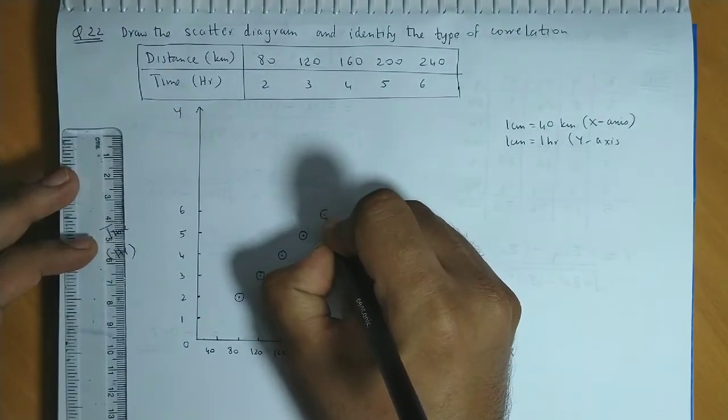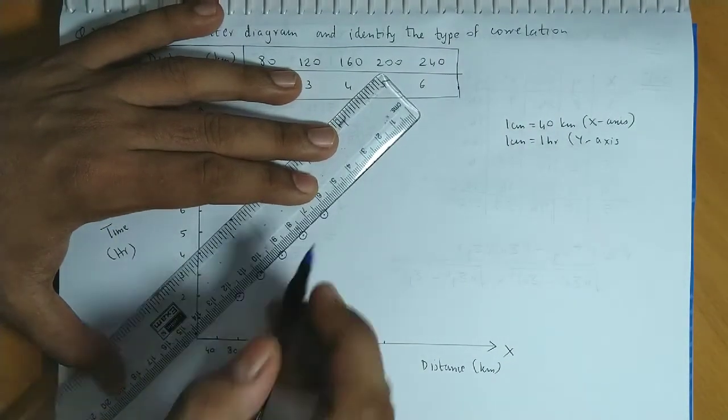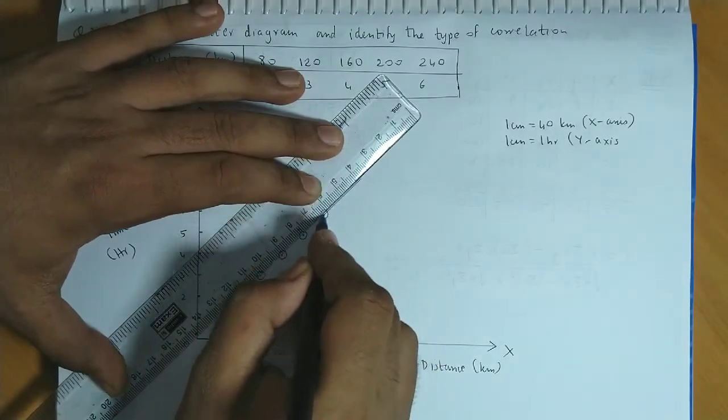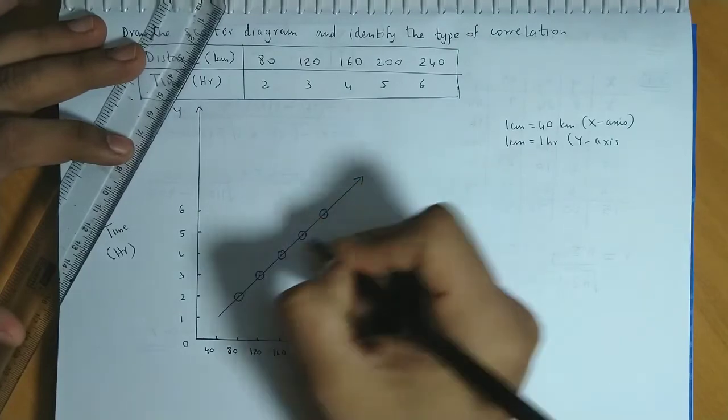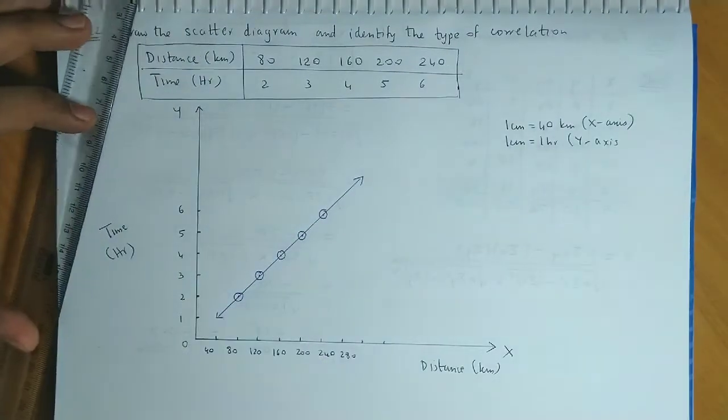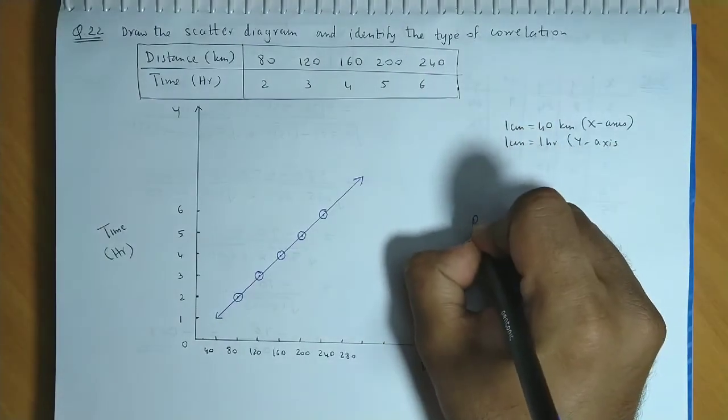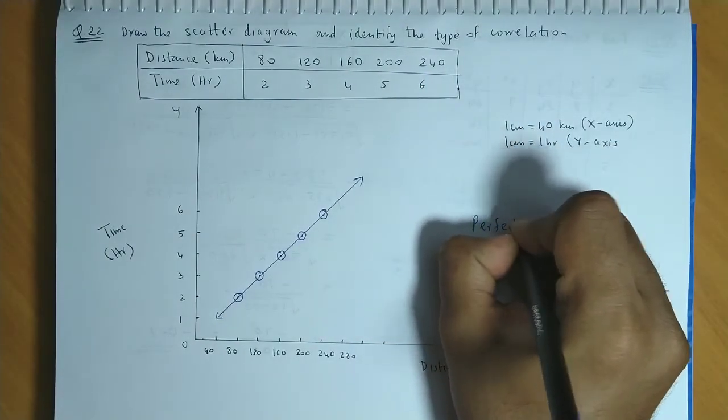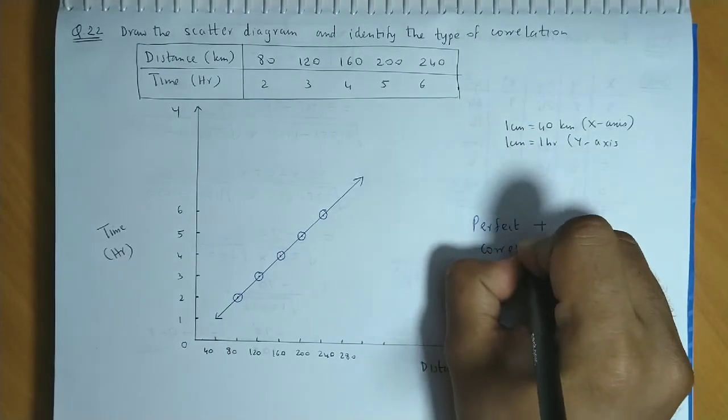So if you observe, this can be a straight line. So this actually represents perfect positive correlation. So the type of correlation is a perfect positive correlation.